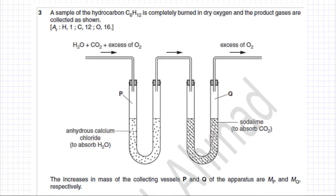The following question is about moles and ratios. A sample of the hydrocarbon C6H12 is completely burned in dry oxygen and the product gases are collected as shown. There's a diagram which is collecting all the products. We need to first construct what happens when C6H12 is completely burned, so I'm going to construct a balanced equation.